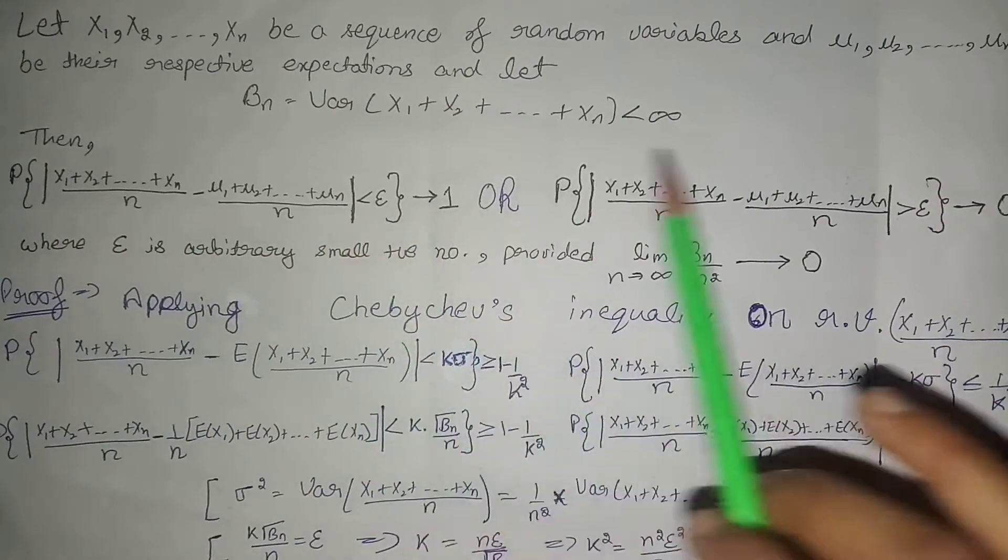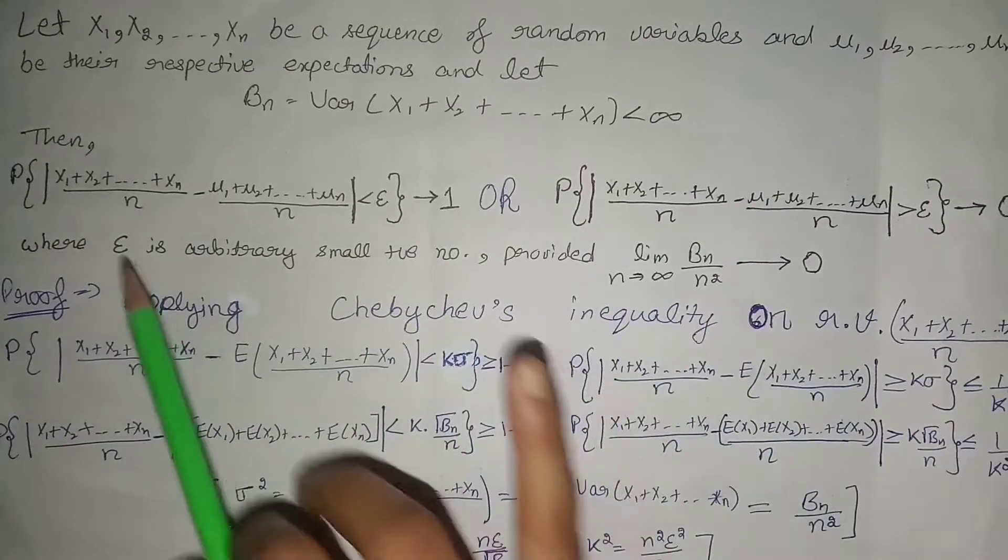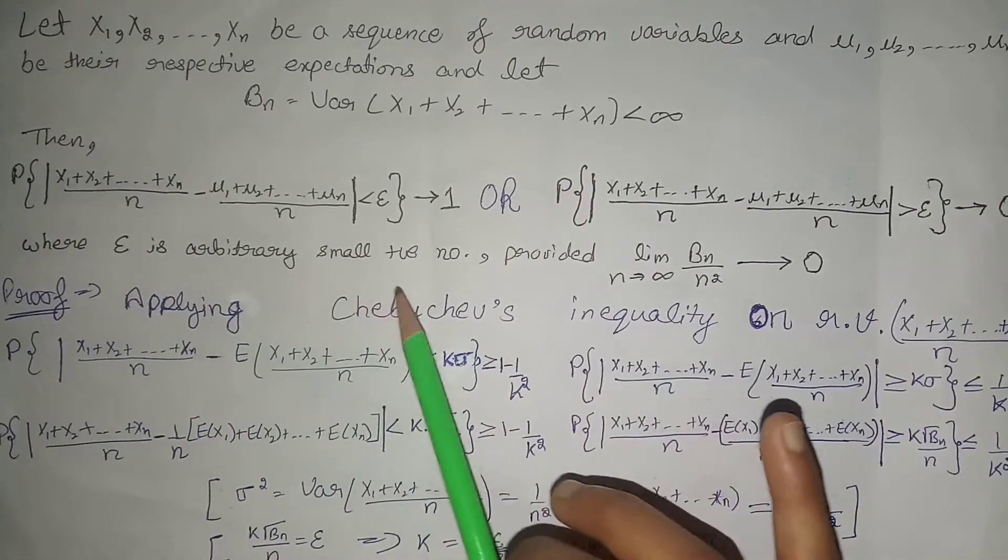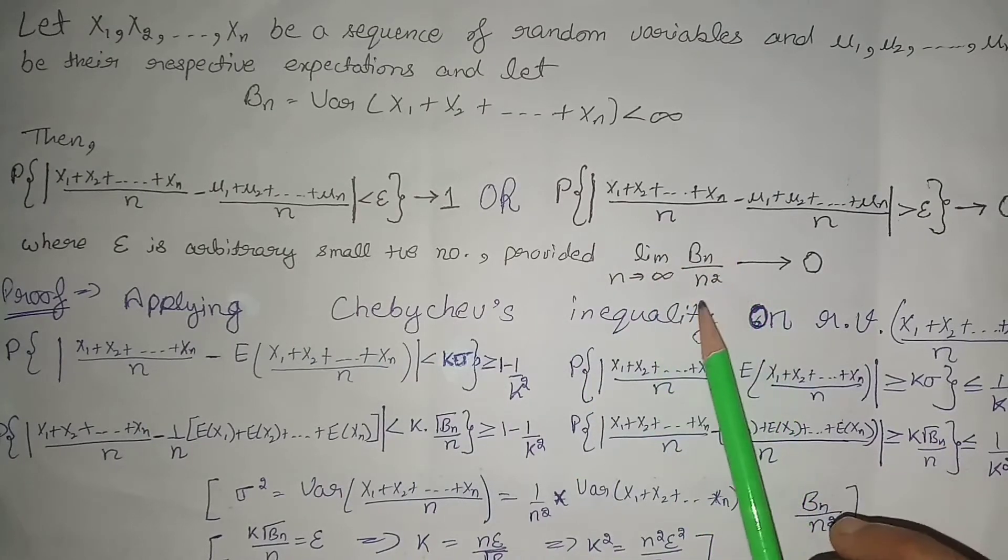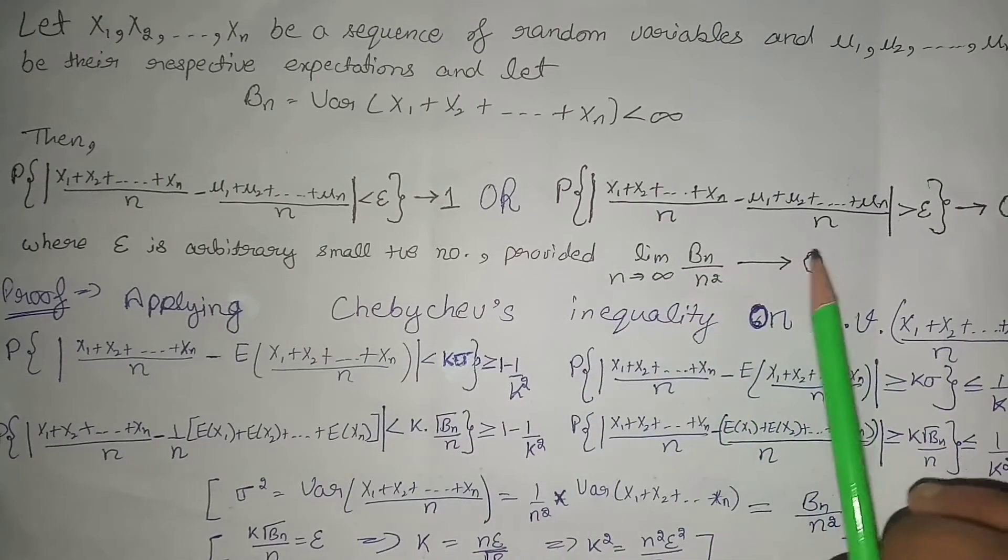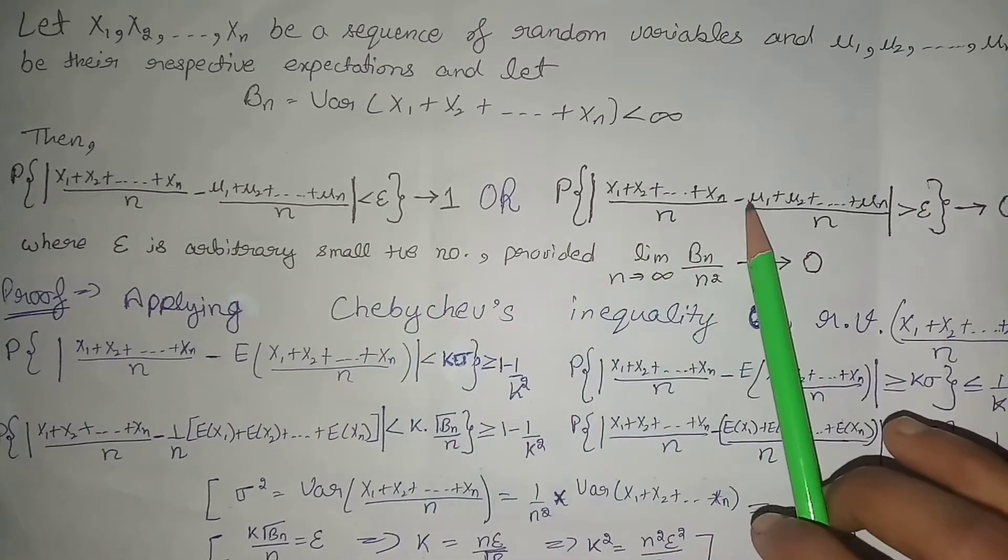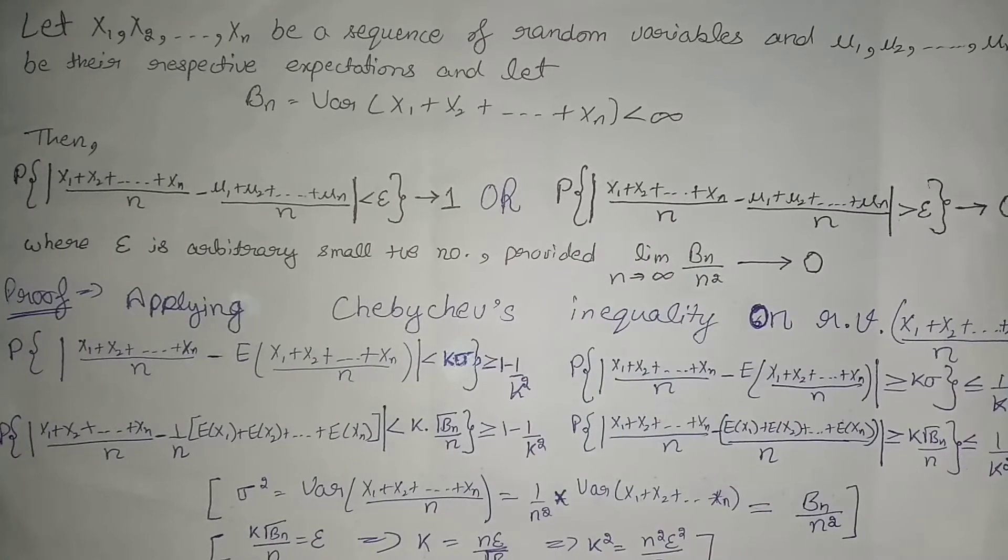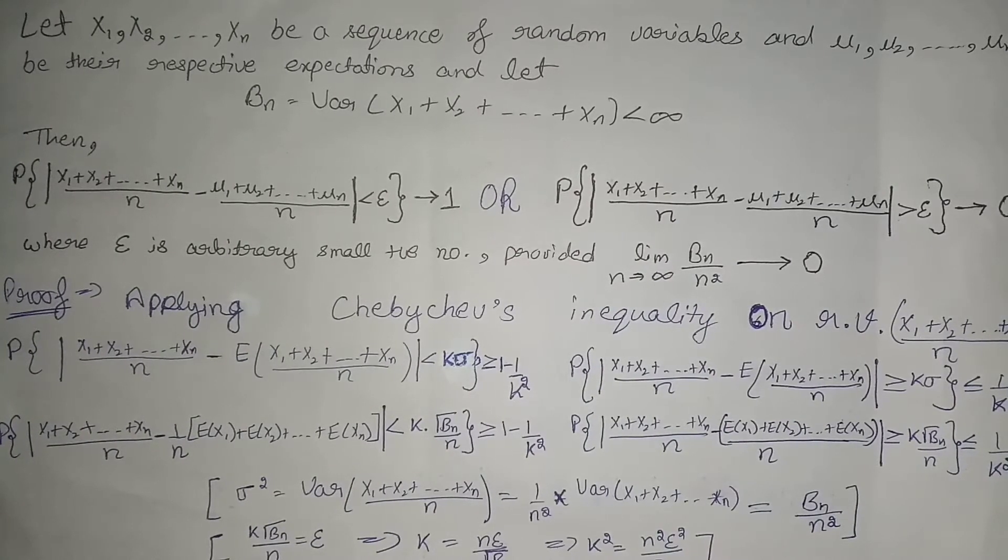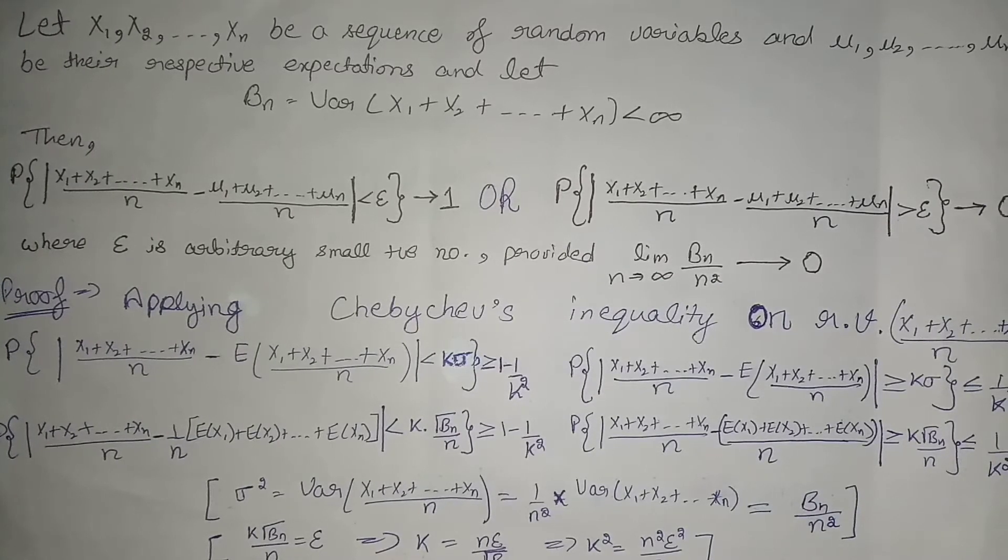Then we have to prove these two statements, where epsilon is an arbitrary small positive number, provided the limit as n approaches infinity of bn divided by n square approaches zero. We will prove both statements by using Chebyshev's inequality, which we have already proved. We have put it in the description box, let's check it out.